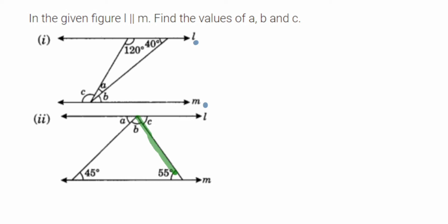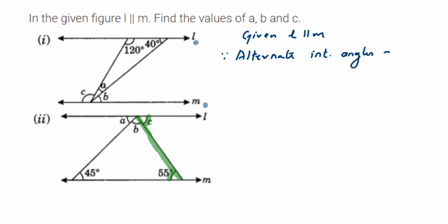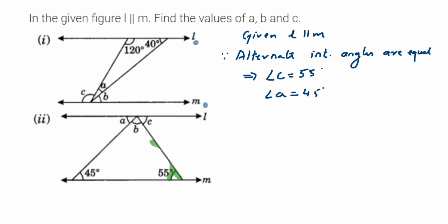Since l and m are parallel, this line will be a transversal. Angle c and the 55 degree angle are alternate interior angles — the same property we used for the first figure — so they are equal. Therefore, l is parallel to m, and since alternate interior angles are equal, angle c is equal to 55 degrees. Similarly, angle a is equal to 45 degrees, because this other line is a transversal and 45 degrees and angle a are alternate interior angles.